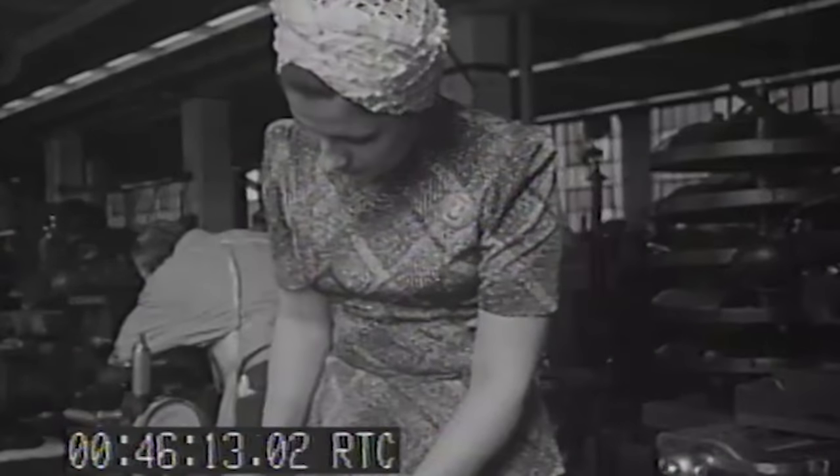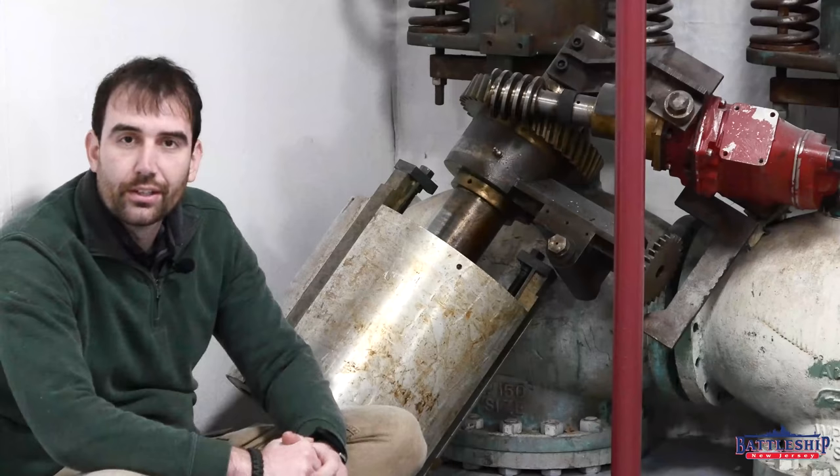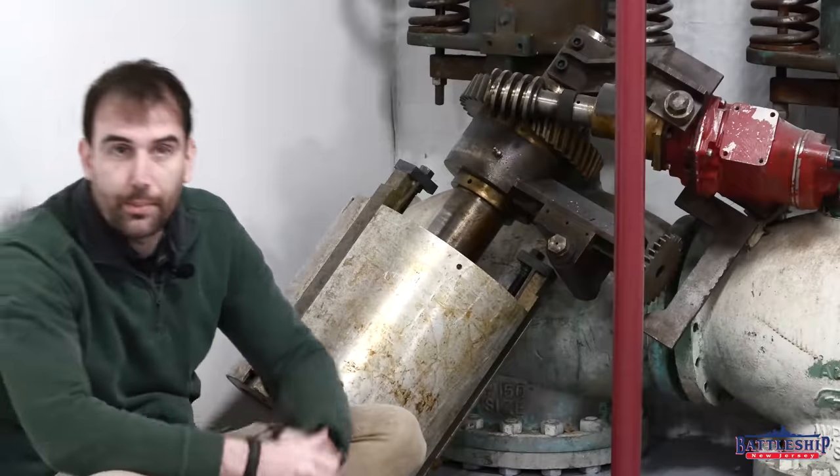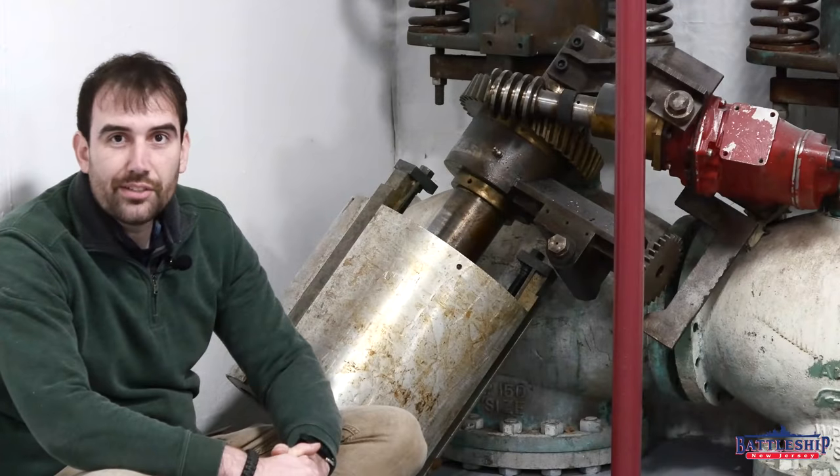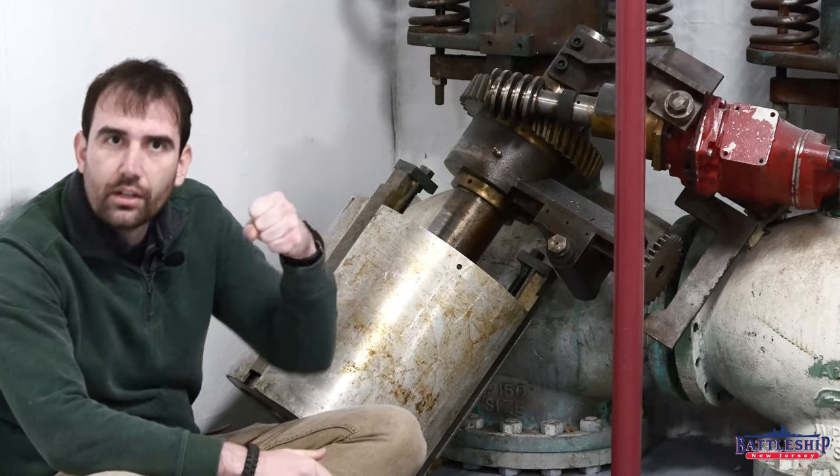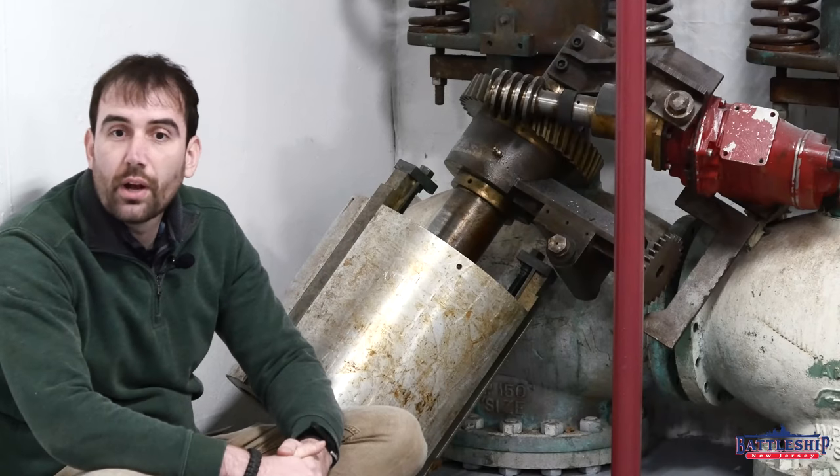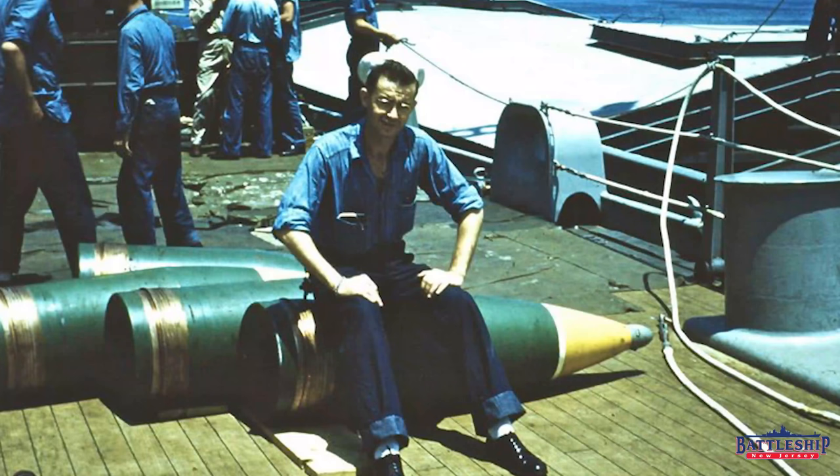So every 300 shots you've got to replace the entire liner, which means removing the entire gun barrel from the ship. But every couple dozen shots, the force of a 16-inch shell pushing its way through that liner, and remember each shell has a brass base ring at the bottom that is designed to be worn.